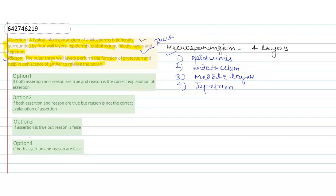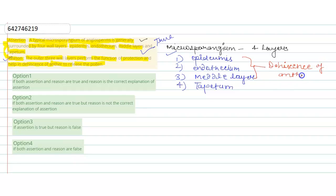Now we come to the reason. In the reason, the outer three layers perform the function of protection and help in the dehiscence of the anther, by which mature pollen grains are released. So this is correct — these three layers help in dehiscence.